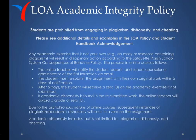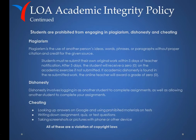Due to the asynchronous nature of online courses, subsequent instances of plagiarism or academic dishonesty will result in a zero on the assignment. Academic dishonesty includes, but is not limited to, plagiarism, dishonesty, and cheating. Plagiarism is the use of another person's ideas, words, phrases, or paragraphs without proper citation and credit for the given source. If found, students must resubmit their own original work within five days of teacher notification; after five days, the student receives a zero. If dishonesty is found in the resubmitted work, the online teacher will award a grade of zero. Dishonesty also involves logging in as another student to complete assignments, or allowing another student to complete your assignments.